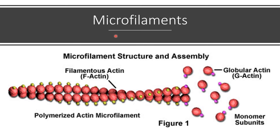Microfilaments are yet another group of structures that form the cytoskeleton of the cell. The microfilaments are made up of actin subunits. There is globular actin and filamentous actin. Globular actin is the monomer — the single subunits of actin — and is called G-actin. Many such globular actin molecules polymerize to form the actin microfilament, in which case the actin is known as filamentous actin, or F-actin. That is the structure of a microfilament.